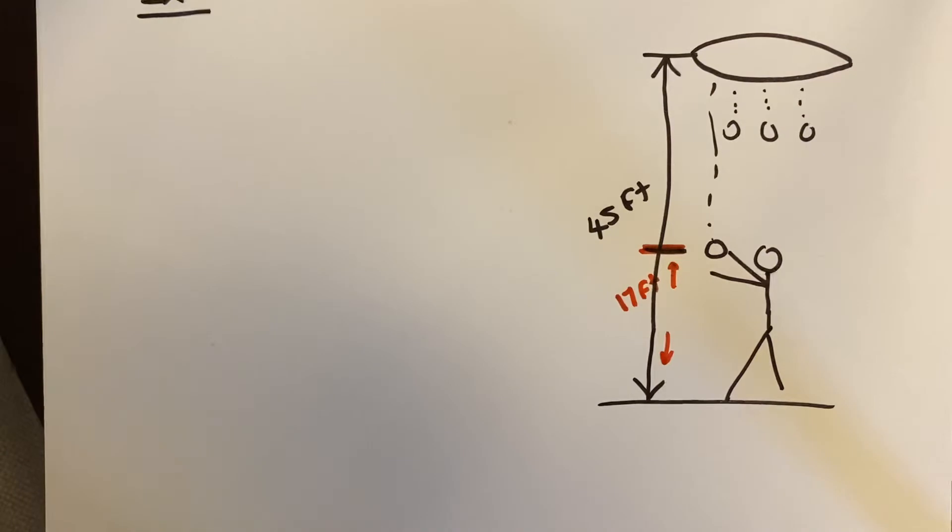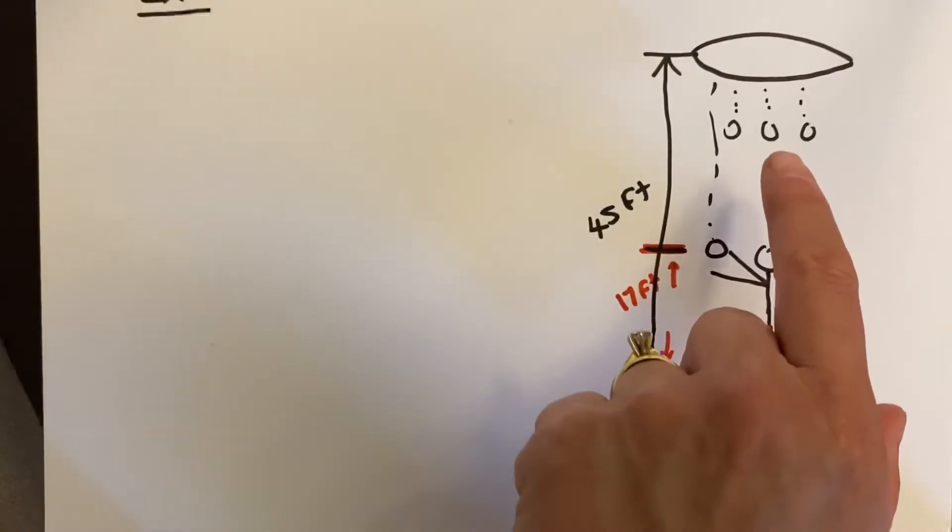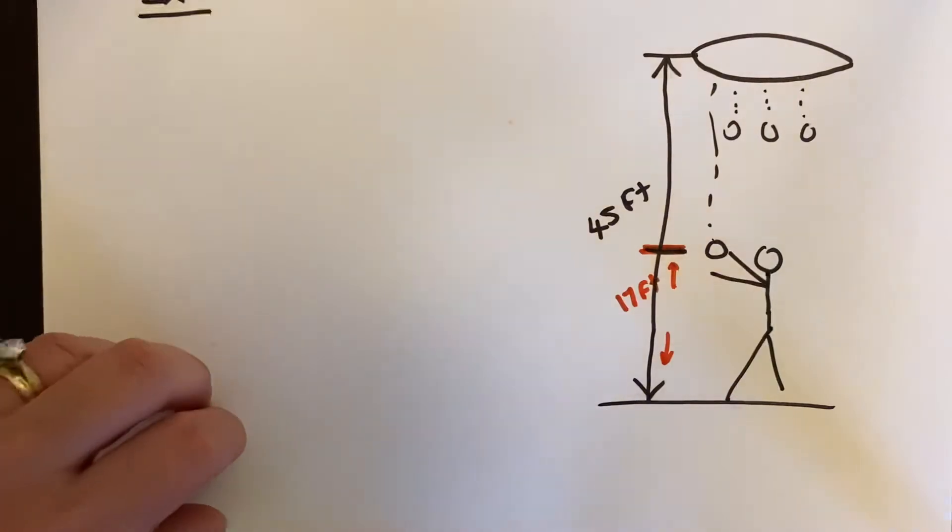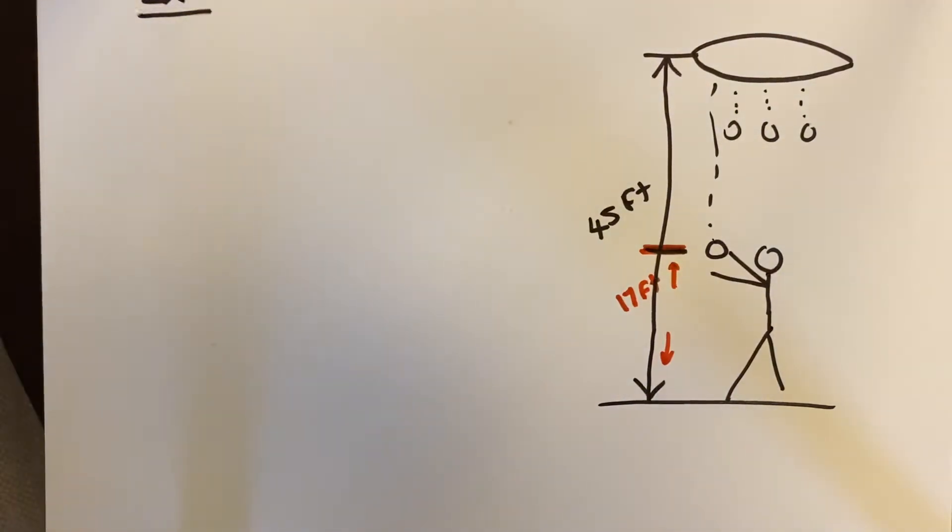During an ice hockey game, a remote controlled blimp flies above the crowd and drops numbered tennis balls. The number on each ball corresponds to a prize, so people are trying to catch them. The blimp is 45 feet in the air, and here's a person who's catching it at 17 feet. Use the information to find the amount of time that the ball is in the air before the guy catches it.